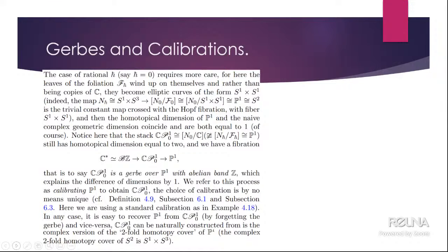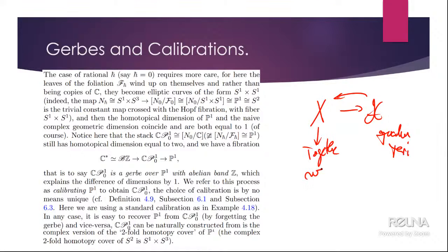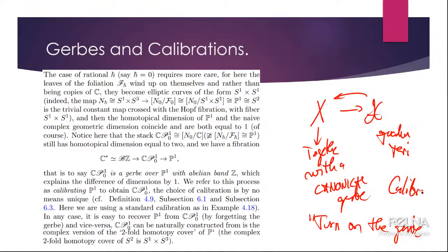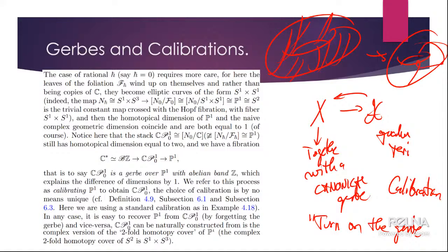When I deform a toric variety into a quantum toric and then deform back, what I really get is the toric variety together with a gerbe — a canonical gerbe — which physicists would say is 'turning on the gerbe.' We call this a calibration. It's technically very important to produce the moduli space. When the Kronecker foliation closes into torus knots (classical case), then upon deforming back you remember at every point a set stabilizer — this is the gerbe.